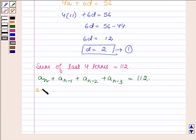Now An is A plus N minus 1 into D. An minus 1 is A plus N minus 2 into D. An minus 2 is A plus N minus 3 into D. And An minus 3 is A plus N minus 4 into D. So this is equal to 112.